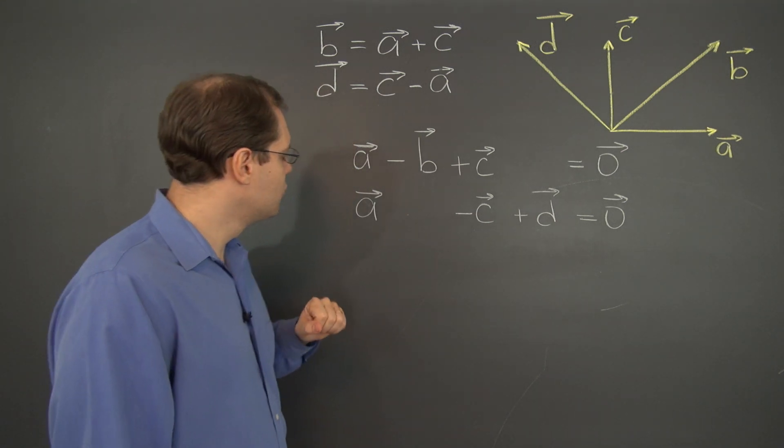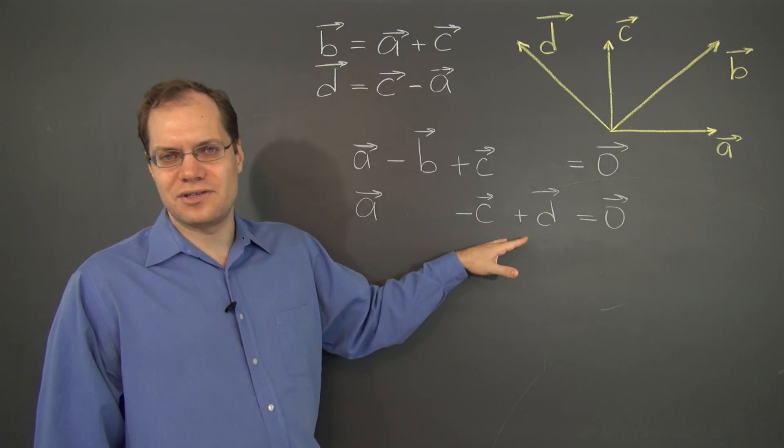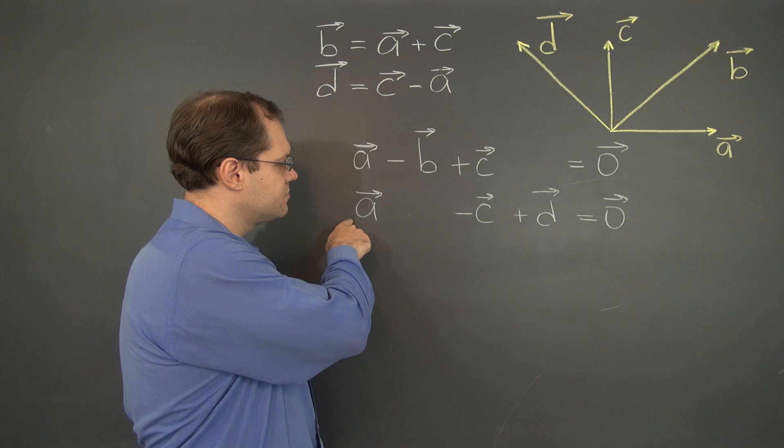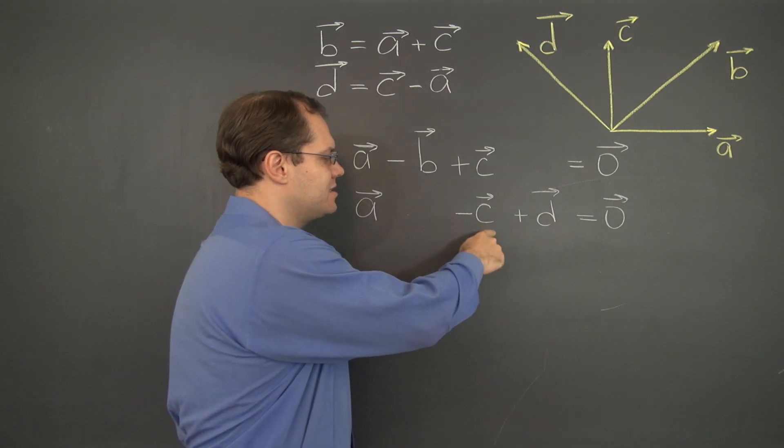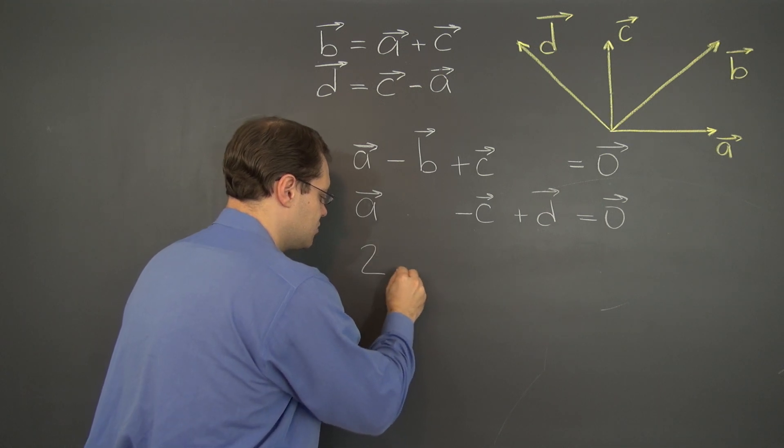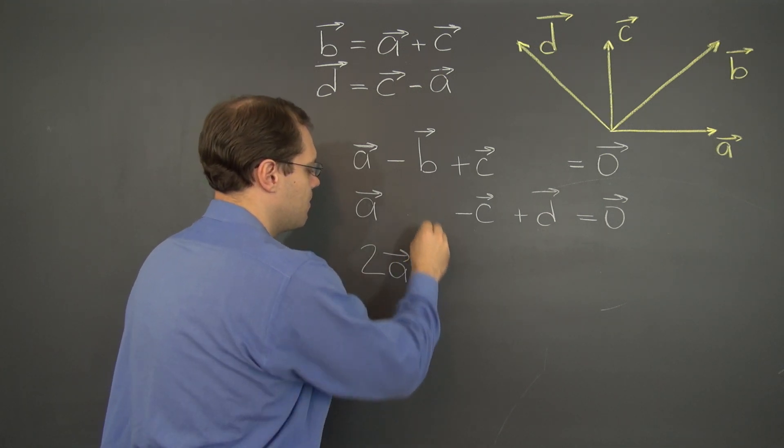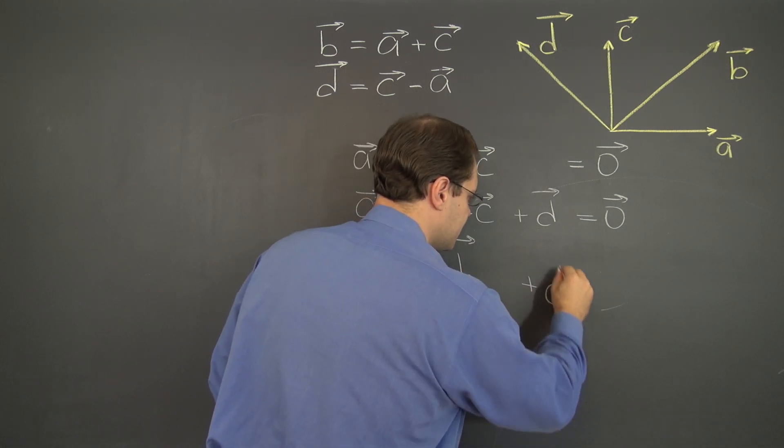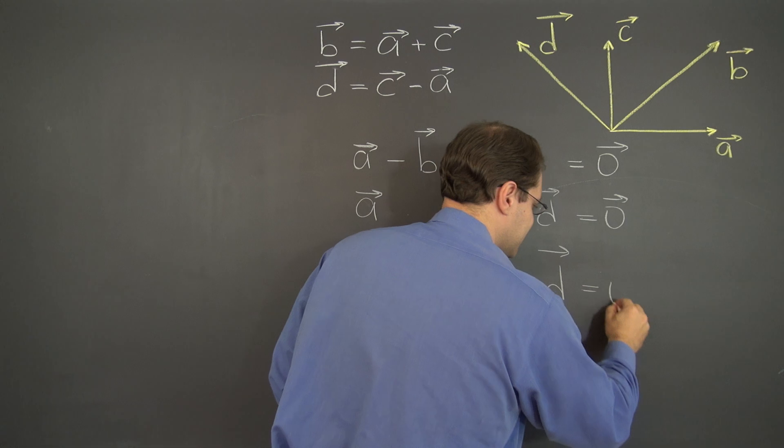And in fact, we do. So if we add these two relationships, here's what we'll have. We'll have 2a minus b, the c's cancel, plus d equals zero. Let's write it down. 2a minus b, the c's cancel, plus d equals zero.